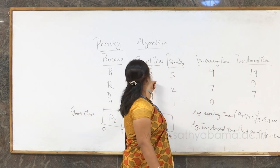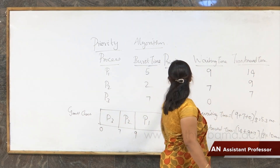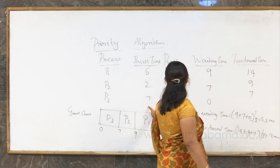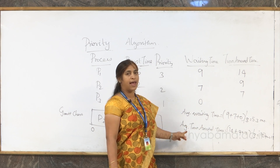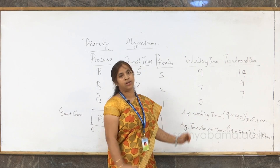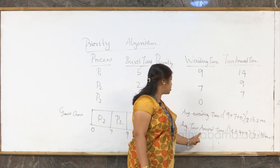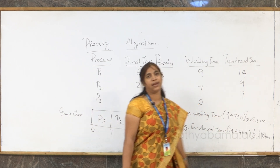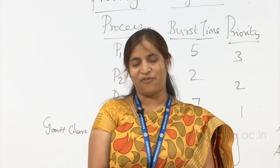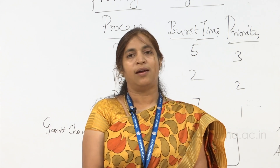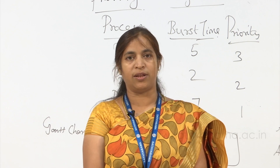Turnaround times: P1 — 5 plus 9 equals 14 milliseconds; P2 — 2 plus 7 equals 9 milliseconds; P3 — 7 milliseconds. Average waiting time is 5.3 milliseconds and average turnaround time is 10 milliseconds for this scheduling algorithm. Hope you have enjoyed this session and we will see in the next video lecture about some other scheduling algorithms. Thank you.